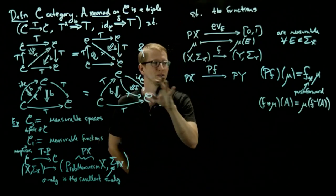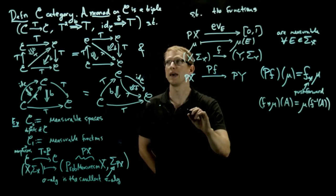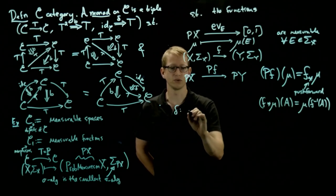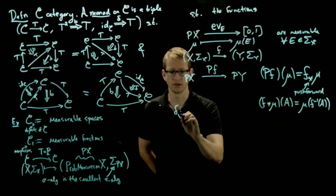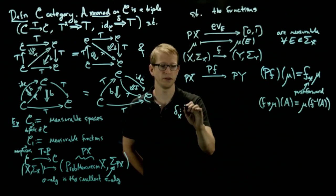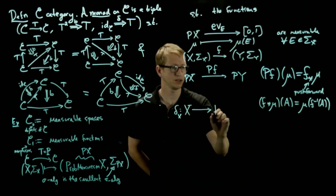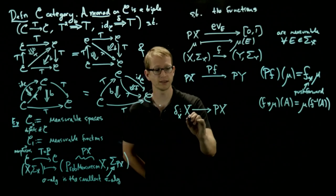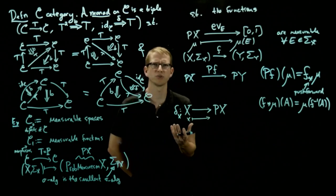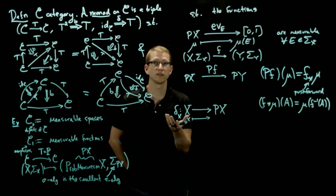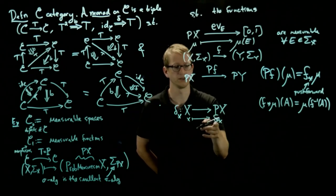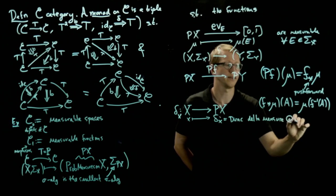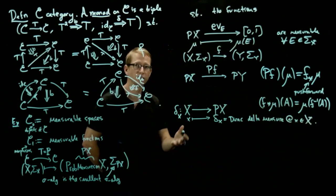That defines the functor P. We still have to define μ (B) and δ. δ is a little bit simpler, so let's define that one first. It's going to be a natural transformation from the identity. So given any measurable space X with its sigma algebra, this is a map from X to probability measures on X. It takes a single element x in X and assigns a probability measure — naturally the Dirac delta measure δ_x at x. It turns out that this defines a natural transformation.